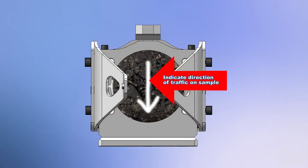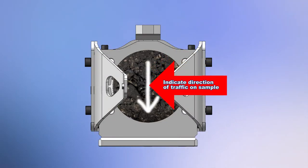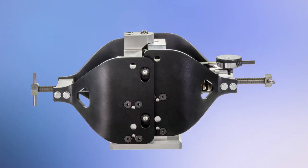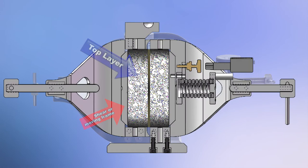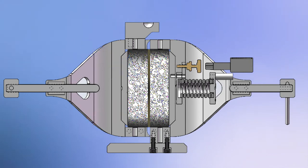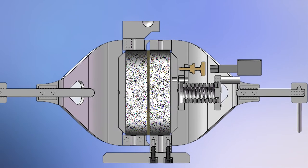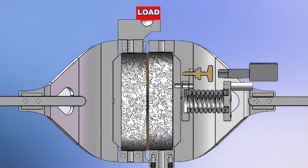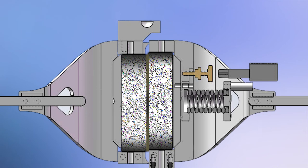The sample is placed within the apparatus so the direction of traffic is vertical, with the top layer positioned on the shearing or moving side. Following test specifications, a continuous shear load is then applied to the test specimen until failure occurs.